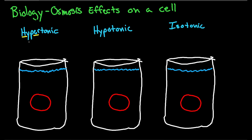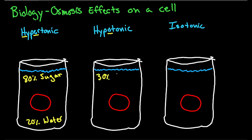So you're going to have a higher content of salt or sugar versus water. We'll say 80% sugar and 20% water. Now for the hypotonic solution — remember the O because H2O is water. This tells you that hypo has a higher water content than solute content. So we could say something like 30% sugar and 70% water.